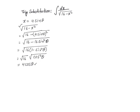Now, let me go ahead and take the derivative of x equal to 4 sine of theta with respect to theta. So, dx over d theta is equal to 4 cosine of theta. Why cosine of theta? Because the derivative of sine of theta with respect to theta is cosine of theta. Then, if we solve for dx, we get 4 cosine of theta d theta.